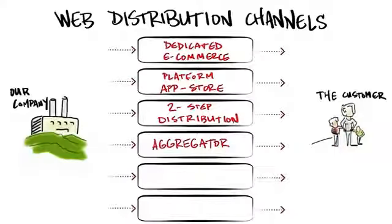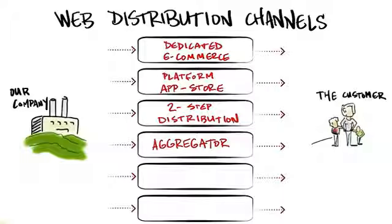You might use an aggregator. An aggregator is somebody who takes a vertical market approach — insurance, shoes, etc. Some examples are, for insurance, LendingTree, or Zappos for shoes.